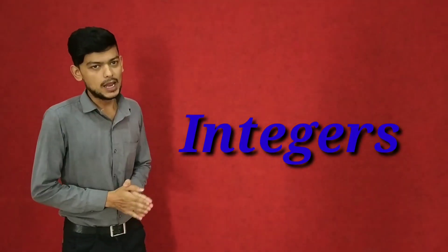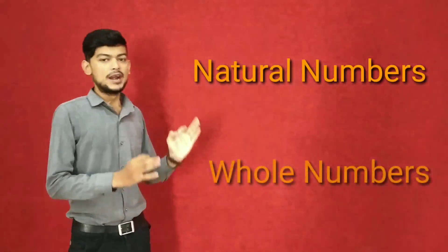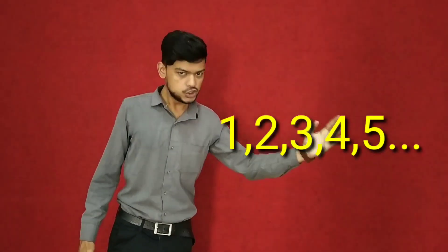Before we learn integers, we have to learn about natural number and whole number. What is natural number? It becomes a nature that is 1, 2, 3, 4, 5, up to 7.